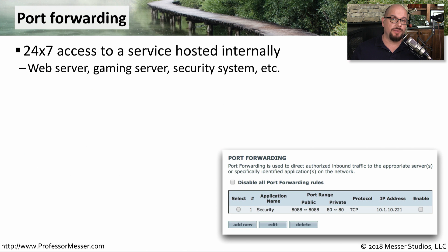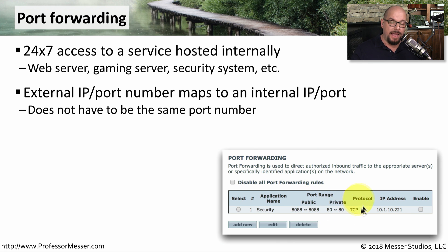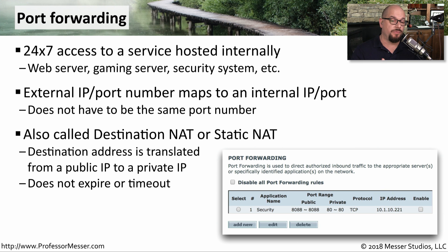There's another type of network address translation called port forwarding. This allows someone on the outside to gain access to devices on the inside of your network. So if you're hosting your own web server or gaming server, and that device has a private IP address, you'll use port forwarding to take external communications and allow access to that internal private IP. To do this, you map the external IP and port number to an internal IP and port number. In this example, someone communicating to the external IP on port 8088 has that traffic translated to port 80 and forwarded to the private IP address 10.1.10.221. You might also hear this referred to as static NAT or destination network address translation, because we're translating the destination IP address.